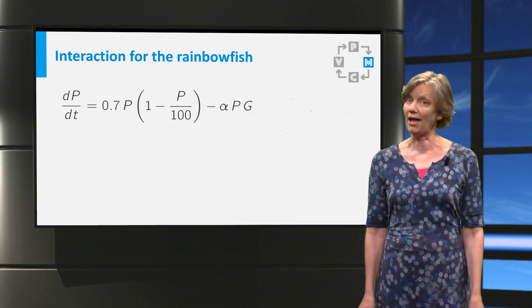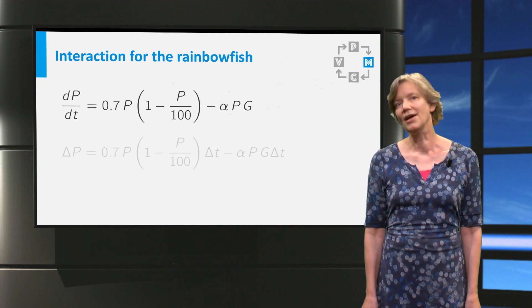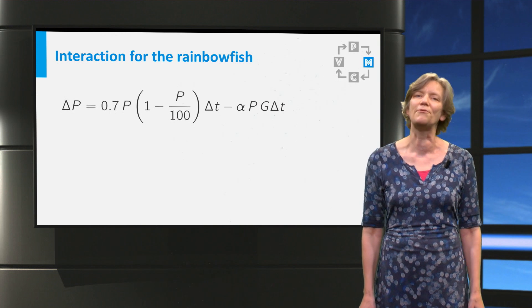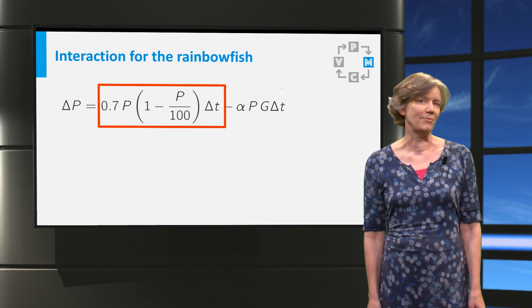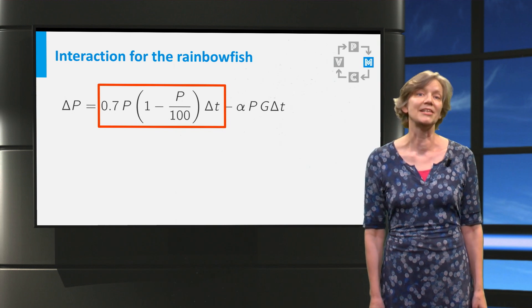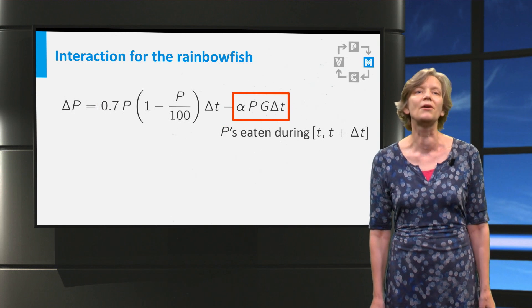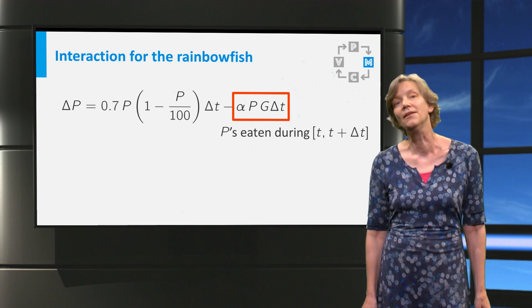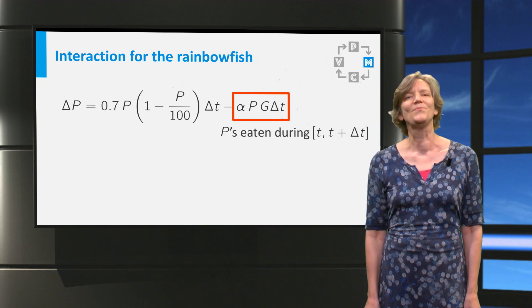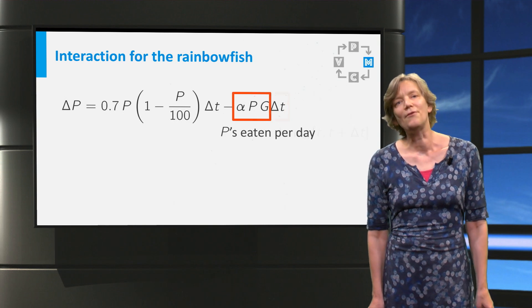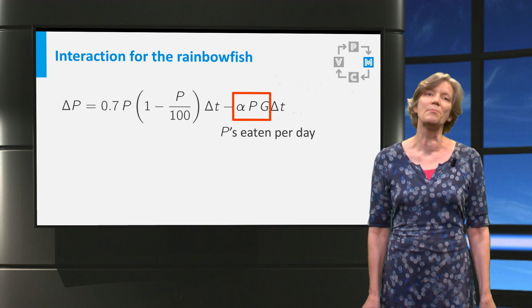First we consider the alpha for the rainbow fish. Let us go back to the balance equation. How does P change during a time interval of length delta t? The first term is the limited growth term without interaction. The second term is the interaction term. It describes the number of rainbow fish that are eating between time t and time t plus delta t. So, if you leave out the delta t, alpha times P times G is the number of rainbow fish eaten per day.